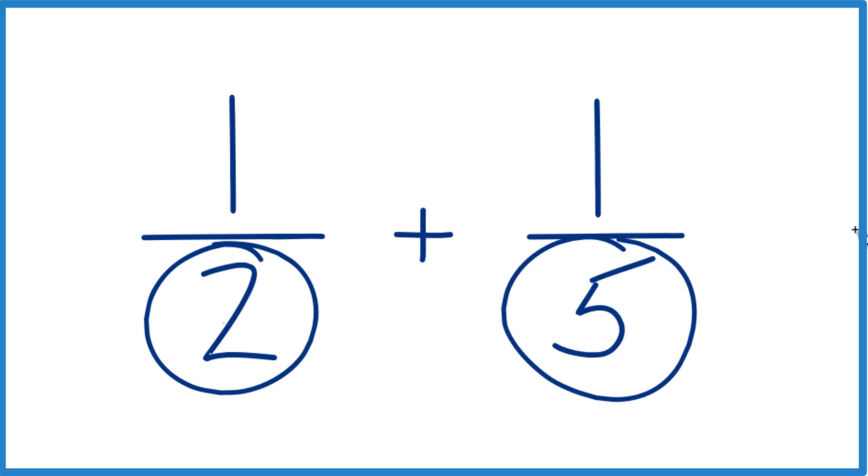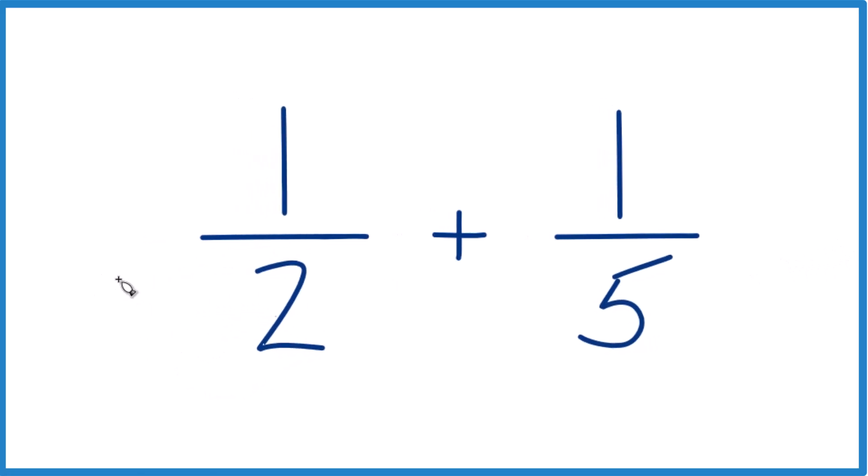Why don't we do this? If we multiply 2 times 5, so put 5 here, that would give us 10 and 5 times 2 that would give us 10. Then we'd have the same denominators.